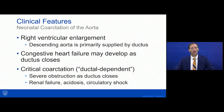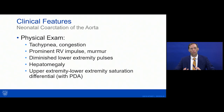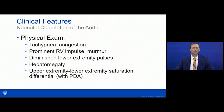This is a critical coarctation — ductal dependent — meaning the ductus must remain open to avoid heart failure. In its absence, renal failure, acidosis, and circulatory shock can occur. On exam you may see tachypnea, congestion, a prominent right ventricular impulse, a murmur if the ductus is small or closed, diminished lower extremity pulses, right heart failure with hepatomegaly, and an upper-to-lower extremity saturation differential depending on ductus size and severity of narrowing.